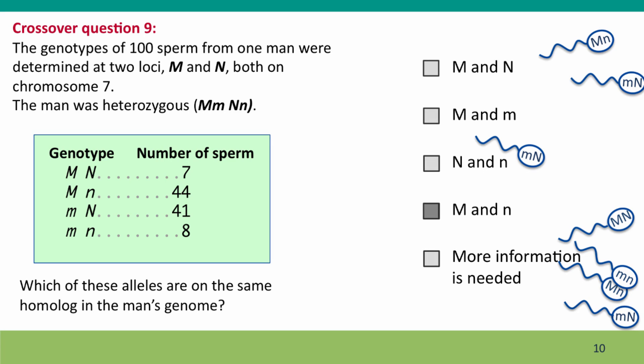And the correct answer is that the big M and little n alleles would have been together on the same homolog. And you know that because they and the little m big n combination are the most frequent. And the fact that they're the most frequent tells you that they're the parental combinations.